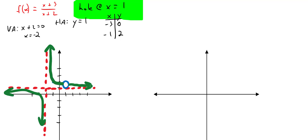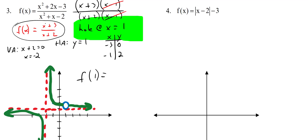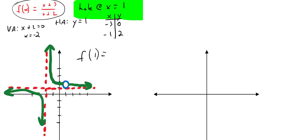If someone asks what is f(1), even though you could plug 1 into the simplified equation and get 4/3, that's not correct — because in the original function, plugging 1 into the bottom gives 1 + 1 - 2 = 0, which is undefined. So you can't just plug into the new equation — you have to check the original. That is rational functions.